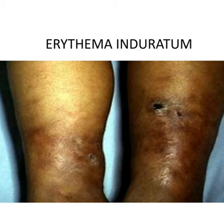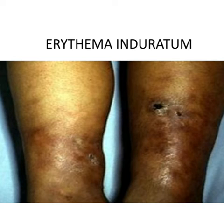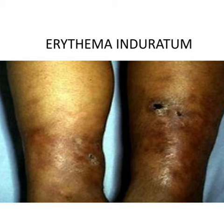This typically presents on the posterior or lateral lower limbs, mainly the lower third of the lower limbs around the ankles, as crops of tender erythematous to violaceous scaly 1 to 2 centimeter subcutaneous nodules. It resolves spontaneously with or without ulceration and can heal with atrophic scarring and hyperpigmentation. Tenderness is usually present and may be associated with acrocyanosis.